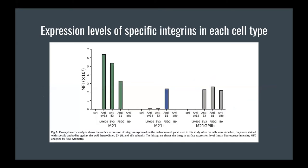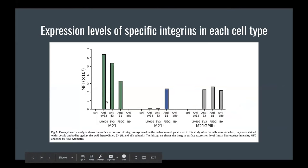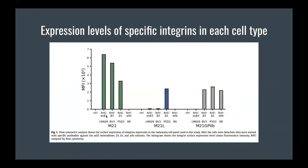Moving into the figures, this first figure is just a visualization of the different melanoma cell types used. In M21, antigens are labeled to denote the presence of specific integrins. In the M21 cell we see the alpha v beta 3 integrin, and it is missing from the M21-L and the M21-GP2B beta 3, where it is replaced with the alpha 2b integrin.